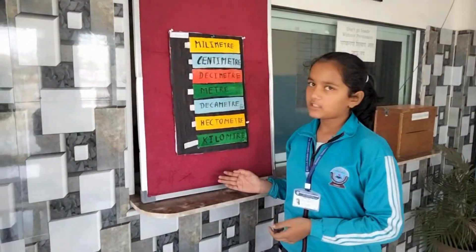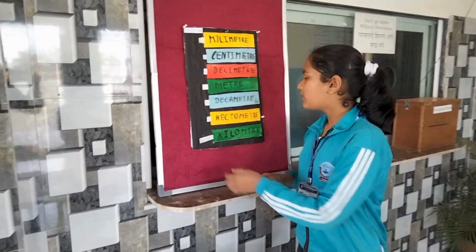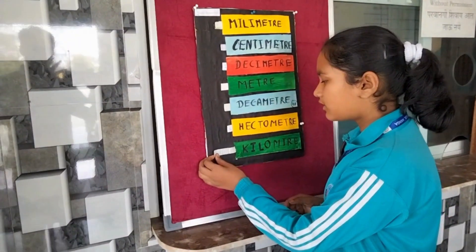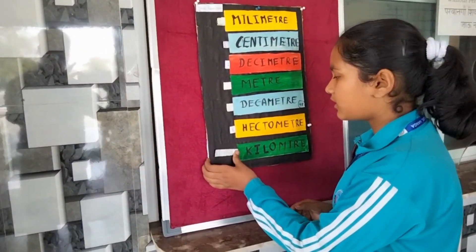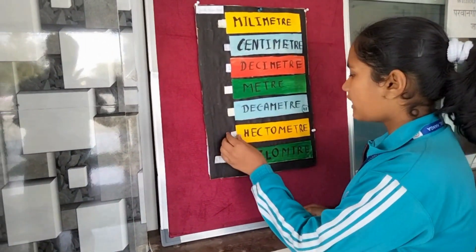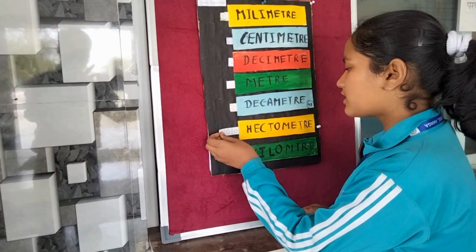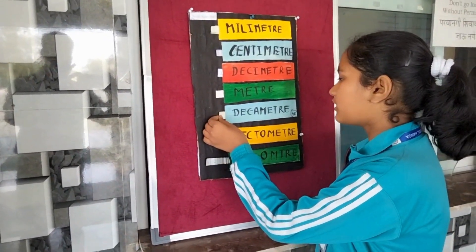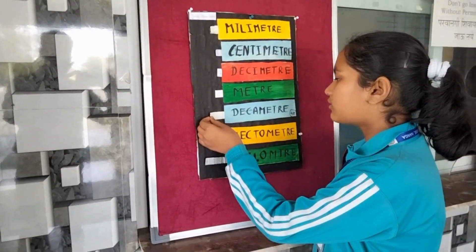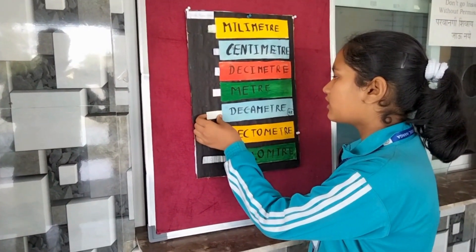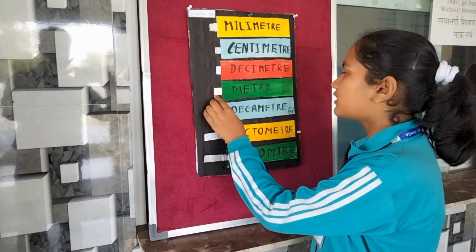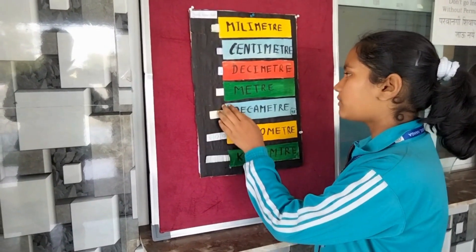This is the model of measurement area. One kilometer is equal to 1,000 meters. One hectometer is equal to 100 meters. One decameter is equal to 10 meters. One meter is equal to just one meter.